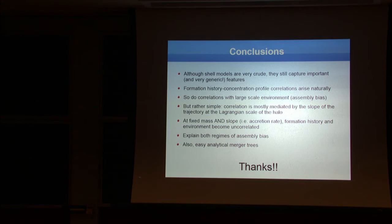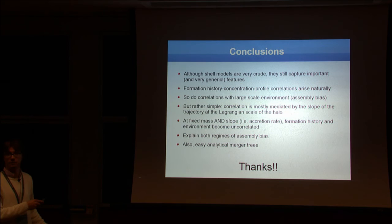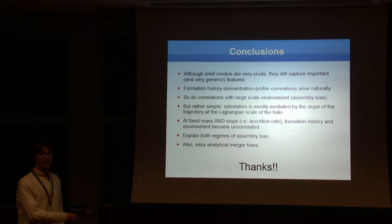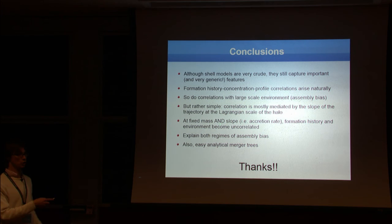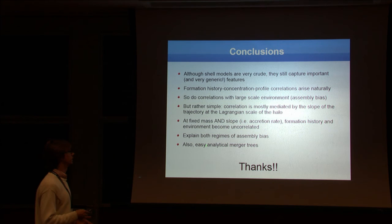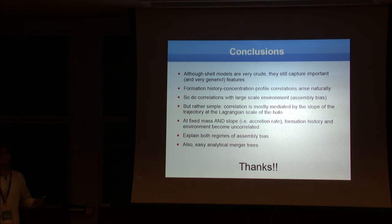These are my conclusions. We have said that shell models may be crude, but they still have a lot of information in them. And this information is quite generic, which is something that is model independent. There is assembly bias, but it is rather simple, because all the correlation between small scale and large scale is actually mediated by the slope of the trajectory, which is a natural measure for the accretion rate of the halo at the redshift that you've identified. And finally, since you have few variables to play with, and then the process becomes Markovian, this lets you build very easily analytical merger trees. Thank you very much for your attention.